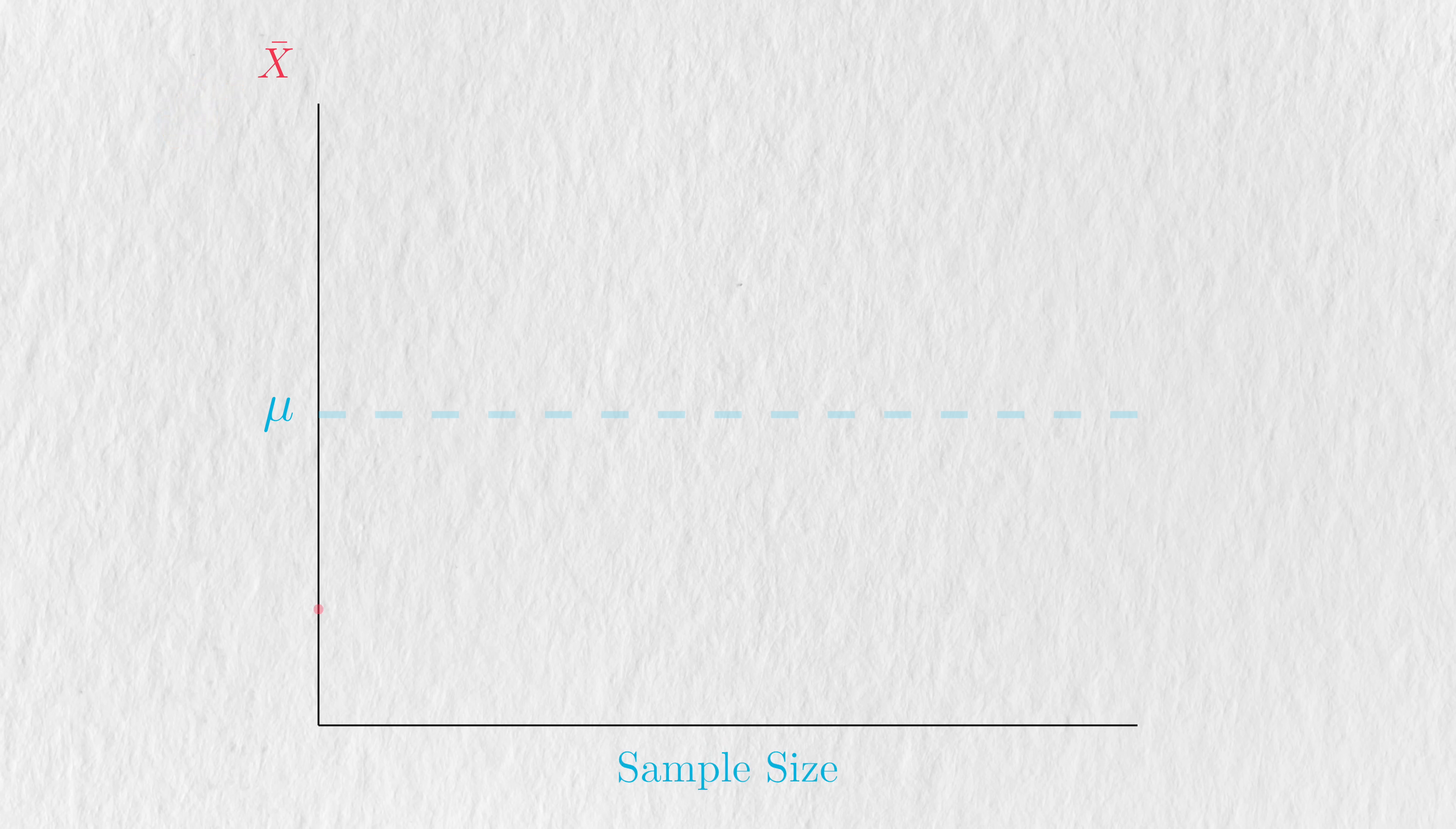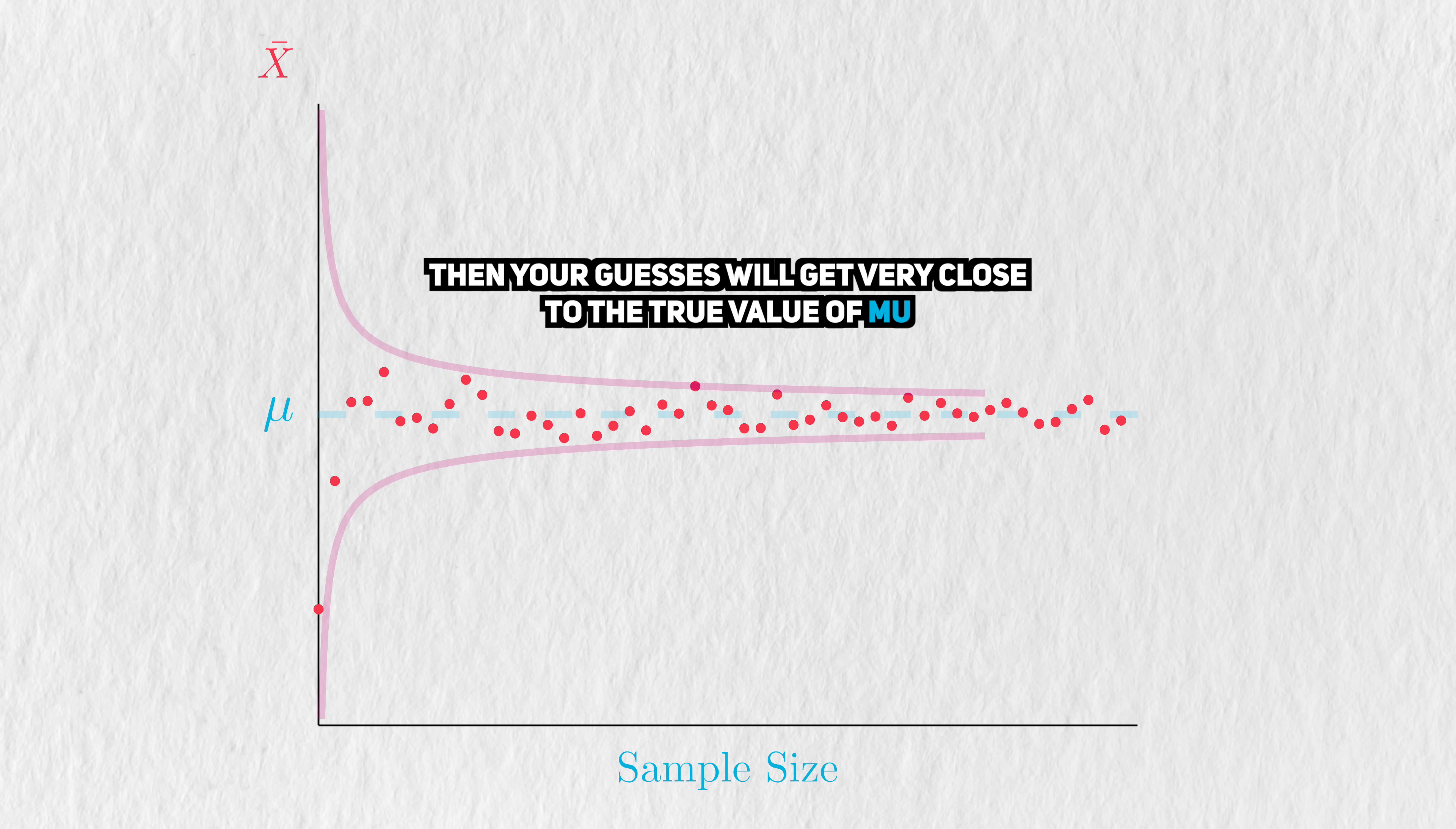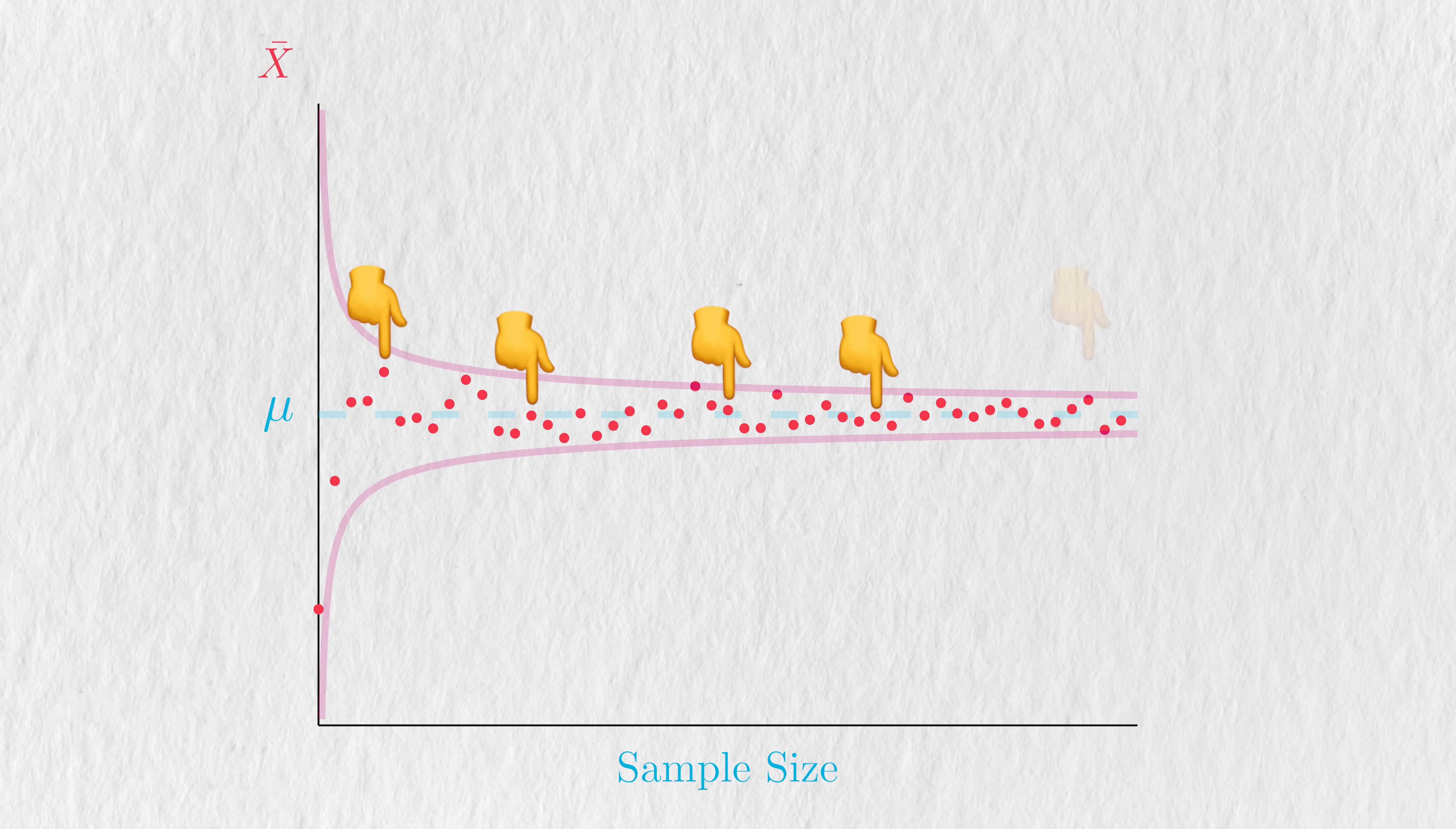The law of large numbers says that as you increase the amount of data, aka the sample size, to infinity, then your guesses will eventually converge or get very close to the true mu. Each of these little dots represents a single sample average calculated from some simulated data.